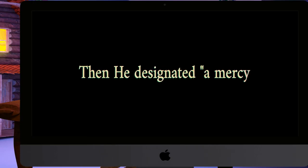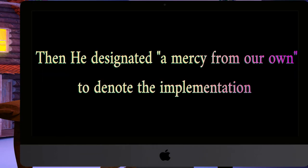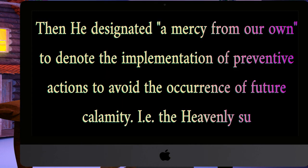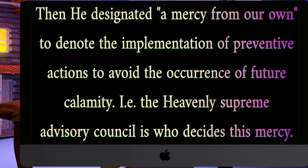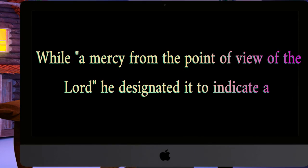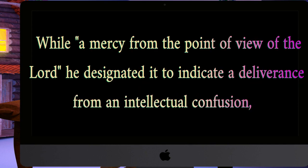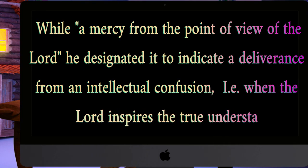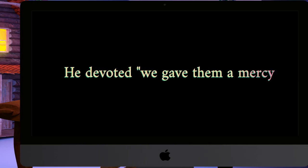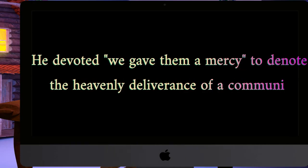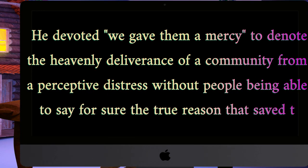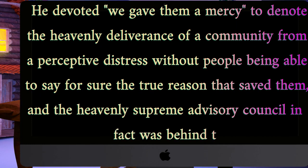Then he designated 'a mercy from our own' to denote the implementation of preventive actions to avoid the occurrence of future calamity — that is, the heavenly supreme advisory council who decides this mercy. While 'a mercy from the point of view of the Lord' he designated to indicate a deliverance from an intellectual confusion — when the Lord inspires the true understanding to save the person from confusion. He devoted 'we gave them a mercy' to denote the heavenly deliverance of a community from a perceptive distress, without people being able to say the true reason that saved them, though the heavenly supreme advisory council was behind this result.